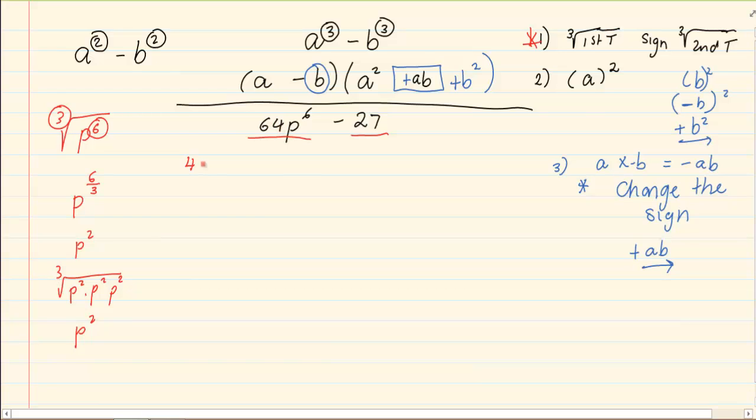So, going back to the question, 64 is 4, p to the power of 6 is p to the power of 2. Minus, because remember we keep the original sign of the question in the first bracket. The cube root of 27 is 3. So, we've got 4p squared minus 3. That is the first rule.